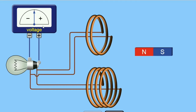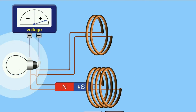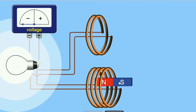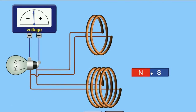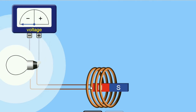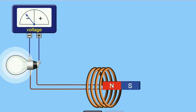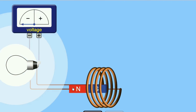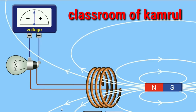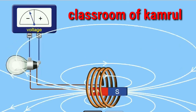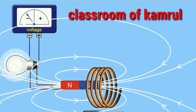The voltage and current are generated when a conductor such as a wire cuts through the magnetic field lines. The size of the induced voltage across the end of a wire is directly proportional to the rate at which the magnetic field lines of flux are being cut. This is Faraday's Law of Electromagnetic Induction — it states that voltage and current are generated when a conductor cuts through the magnetic field line.